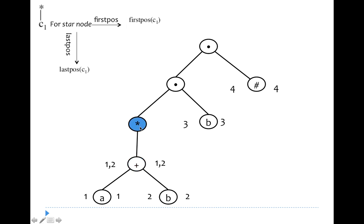For the closure (star) node, there is a single child c1. Its first position equals firstpos(c1) and its last position equals lastpos(c1). Hence firstpos and lastpos of the closure node are both {1, 2}.